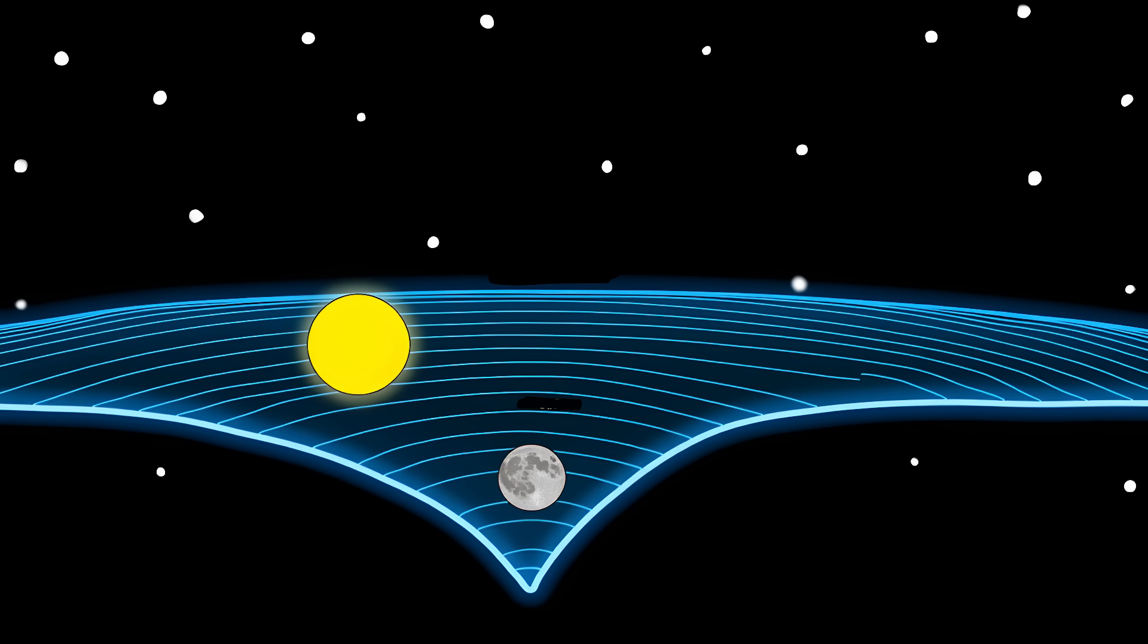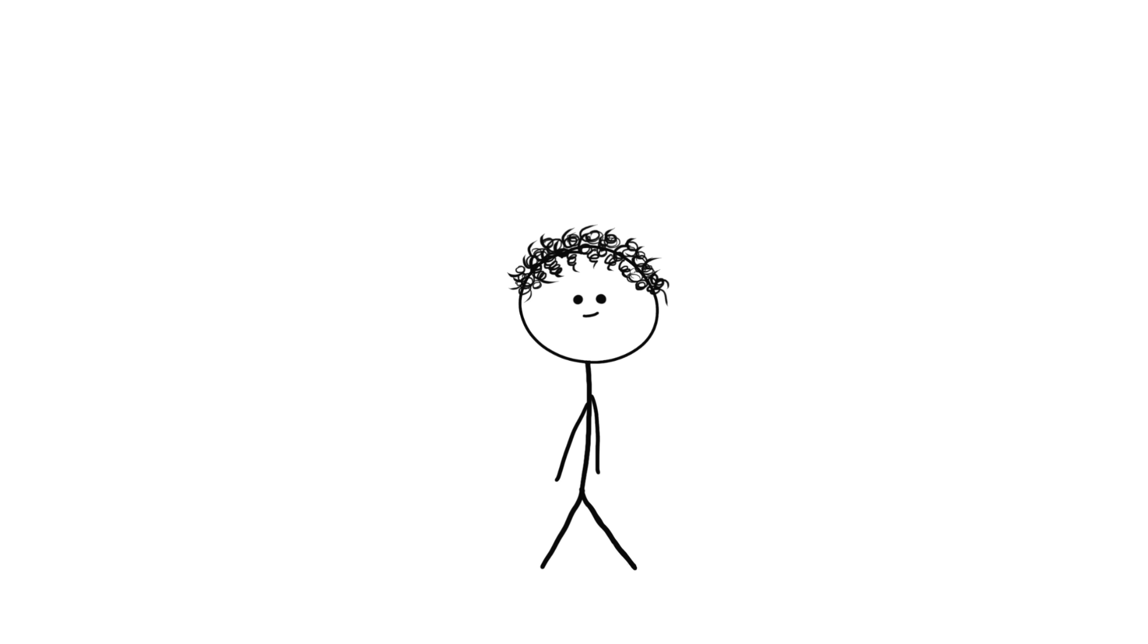Then Einstein shows up with his theory of relativity and explains Mercury's orbit perfectly. Turns out space itself is bent, warped like a giant cosmic trampoline. There was no missing planet after all.